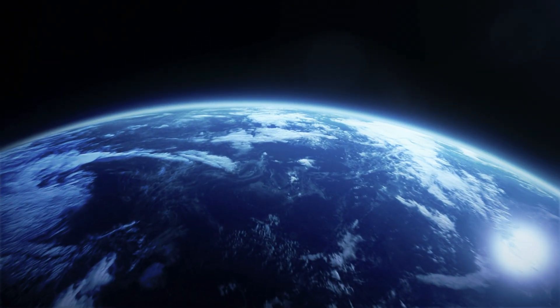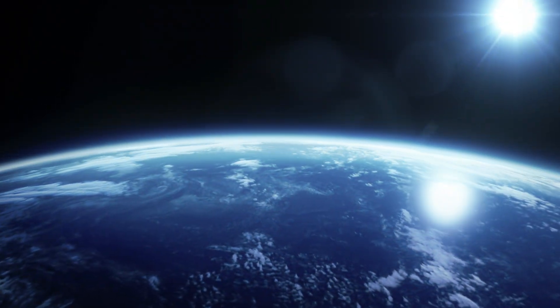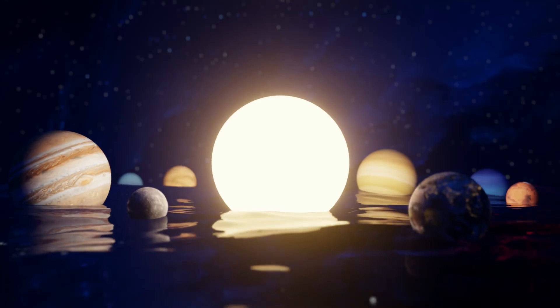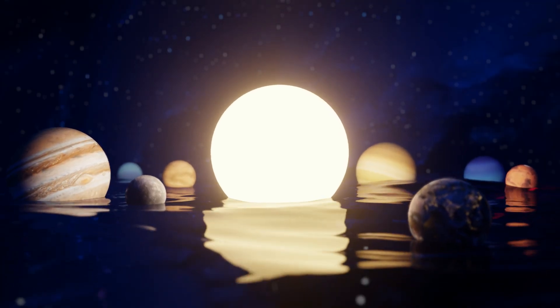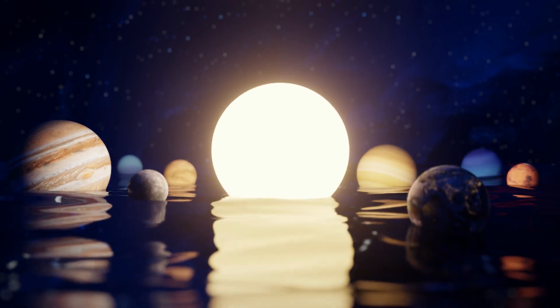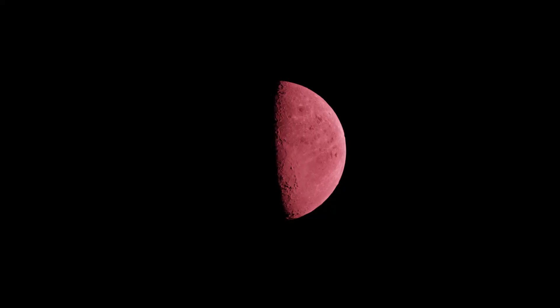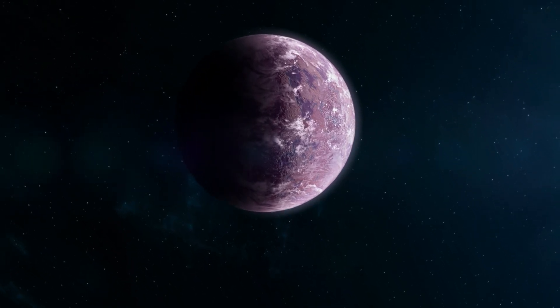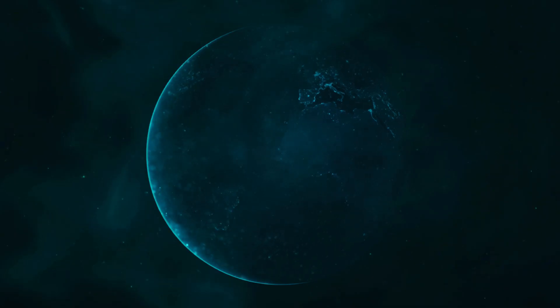And what's really intriguing about this particular super-Earth is that it orbits within what's known as its star's habitable zone, the region around a star where temperatures are just right for liquid water to exist on a planet's surface. Now, on Earth, we know that where there's liquid water, there's often life. So, could Gliese 581c be home to extraterrestrial life? Well, possibly. But if it is, it's likely to be life as we've never seen it before.